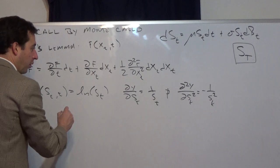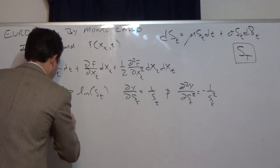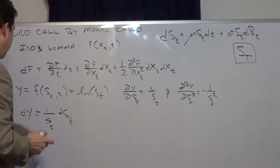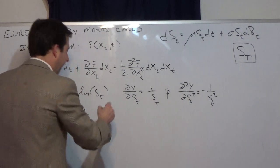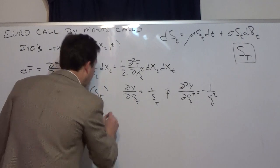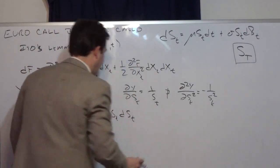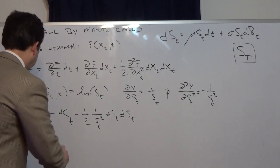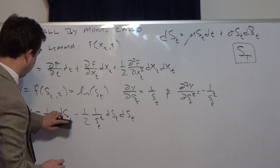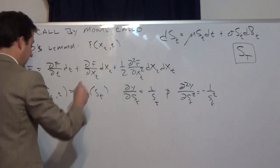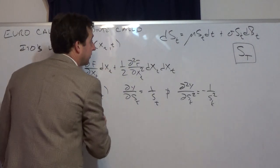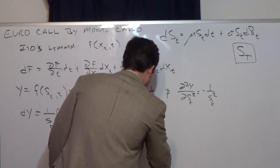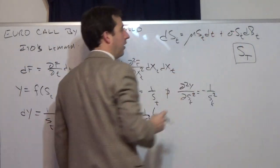Plugging these in: dy equals one over S_t times dS_t, minus one-half times one over S_t squared times dS_t dS_t. Now, assuming the underlying follows geometric Brownian motion, I can substitute dS_t equals mu·S_t·dt plus sigma·S_t·dB_t into this equation. That gives us one over S_t times (mu·S_t·dt plus sigma·S_t·dB_t), minus one-half times one over S_t squared times the product of two of these dS_t terms.